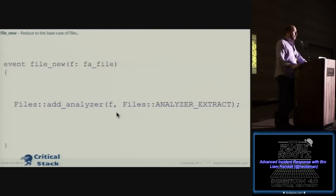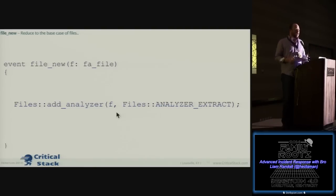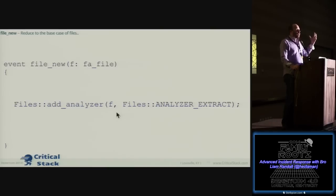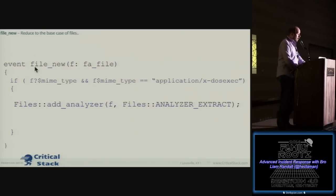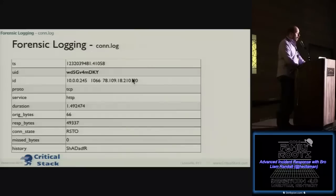Let's look at a sample policy. This policy extracts all the things in all directions on all protocols and saves them out to disk — that's it. When we talk about Bro apps, people get intimidated thinking they don't want to learn another programming language. But this programming language is unlike anything you've worked with before — it's high-level logic blocks. This would save everything out to disk. If we only wanted to save executables, we'd add a little if statement: is there a MIME type, and if so, is it application/x-dosexec? Now we're saving all DOS executables in both directions on all protocols.